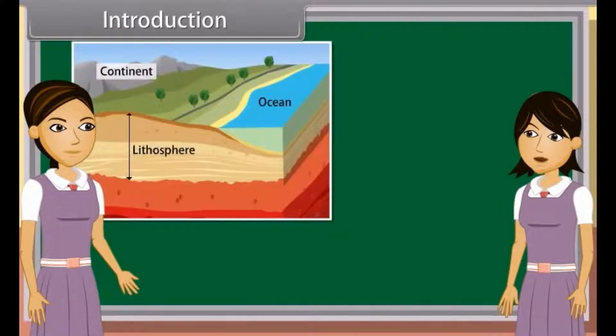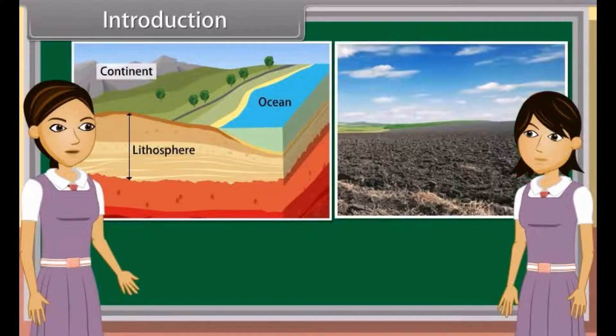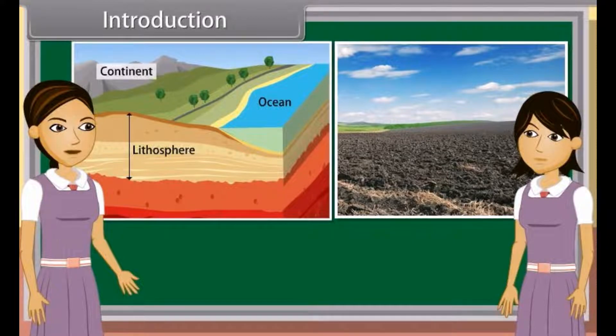Lithosphere is the main life-supporting system and the top layer of earth is called soil. Soil is the main natural resource which is essential for survival and development. Soil covers more than four-fifths part of land.